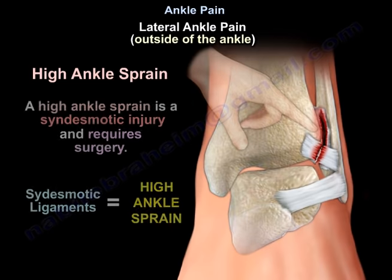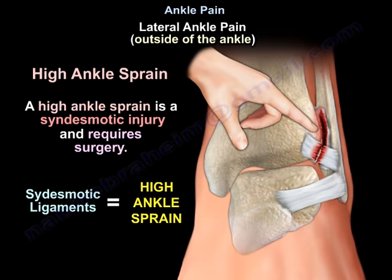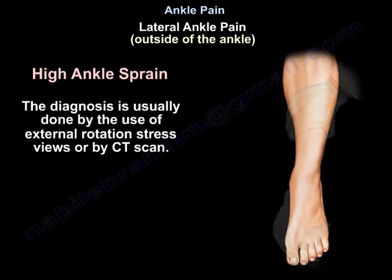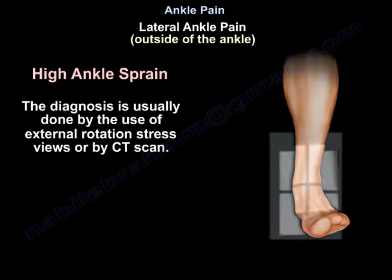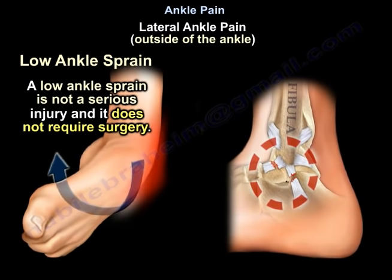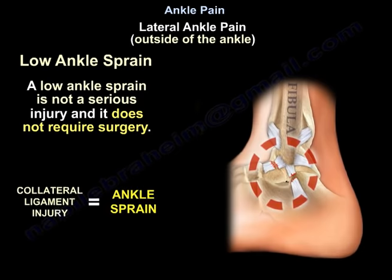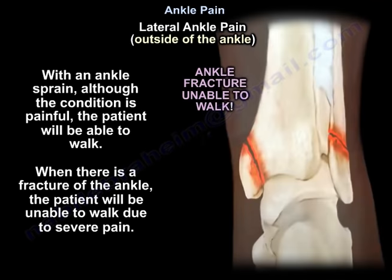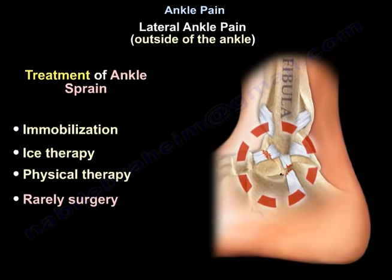A high ankle sprain is a syndesmotic injury that requires surgery. It injures the ligament connecting the tibia to the fibula at the ankle joint and is diagnosed by external rotation stress view or CT scan. A low ankle sprain is a collateral ligament injury, not serious, and does not require surgery. With an ankle sprain the patient can walk, but with a fractured ankle they cannot. Treatment includes immobilization, ice therapy, physiotherapy, and rarely surgery.